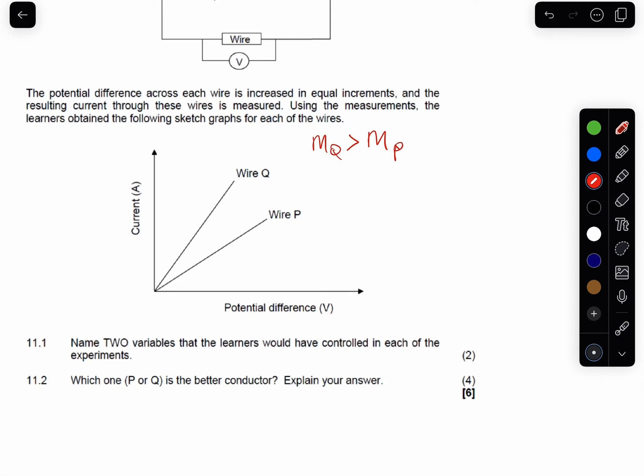Now their gradient, if you're looking here guys, it's going to be change in I over change in V. Therefore, the gradient here is going to be one over R, right? The gradient there. So now I'm not going to dwell on that, guys.